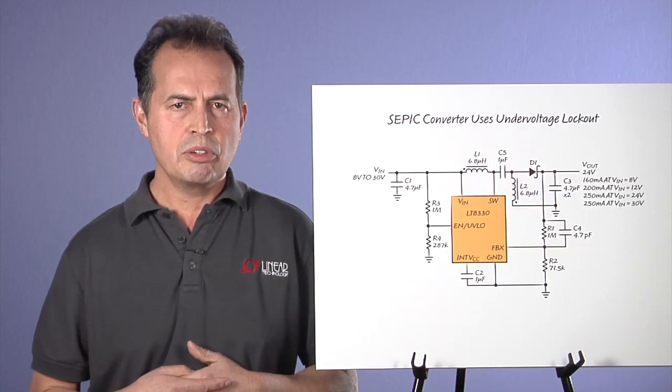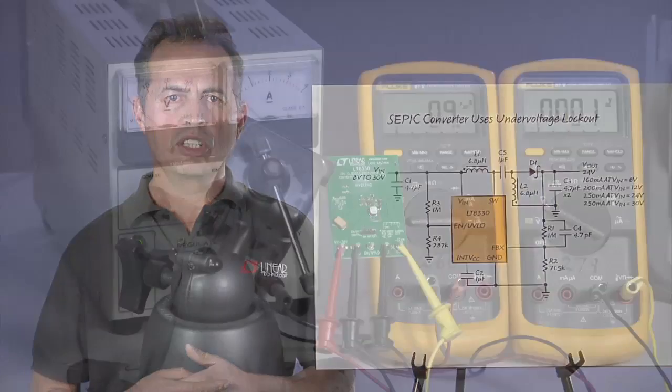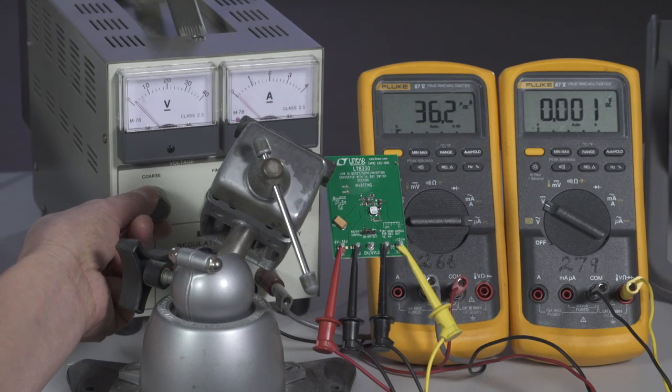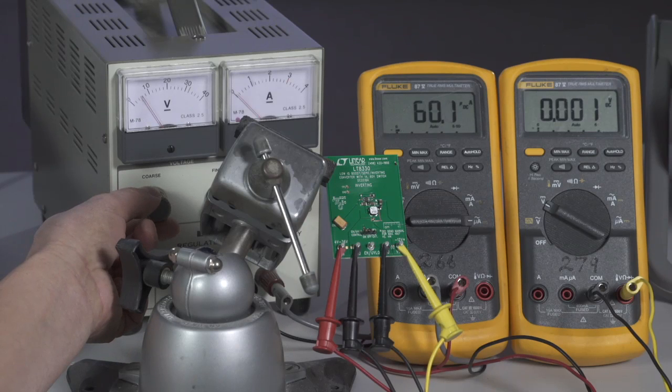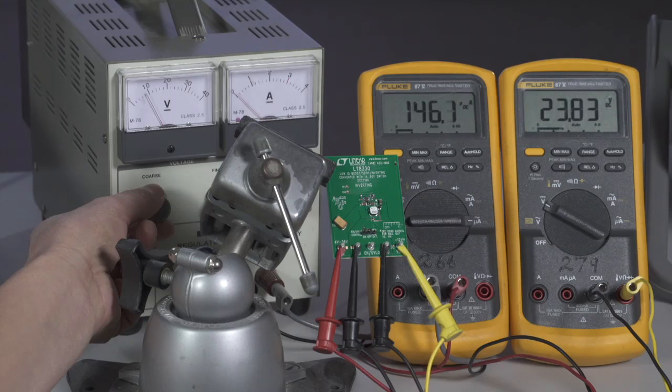Undervoltage lockout is very useful in situations where the source impedance is high or the input voltage is ramped very slowly. In such cases, the inrush current can drag the input voltage down and keep the converter from starting up.